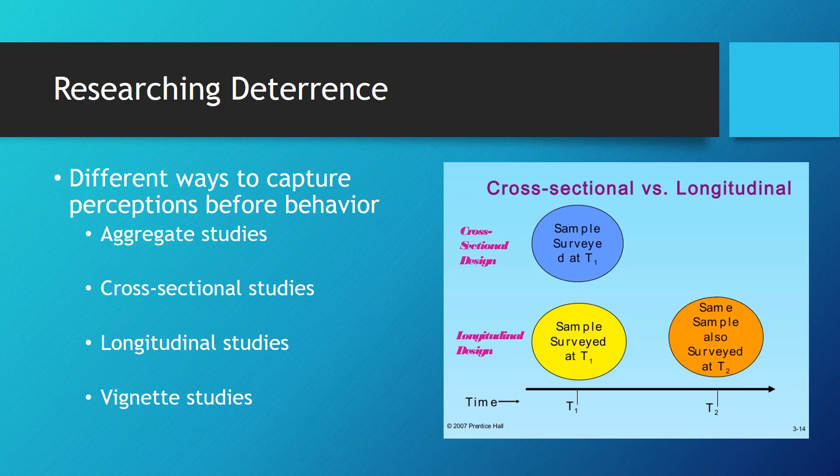The first studies were done on an aggregate basis, meaning that researchers were studying behavior at the macro level and not looking at individual people. This method is helpful for identifying trends, but makes cause and effect identification difficult because you never talk to people about their own perceptions and attitudes.